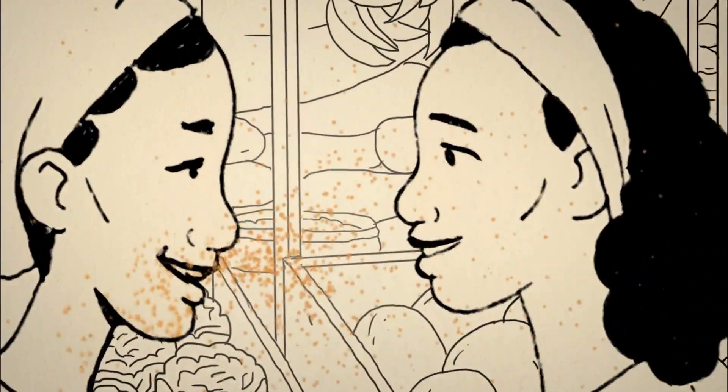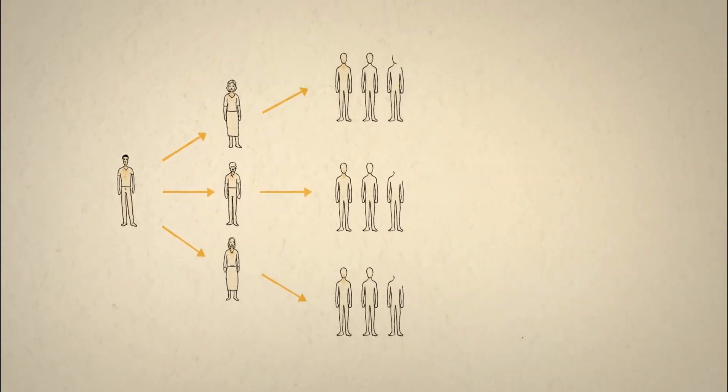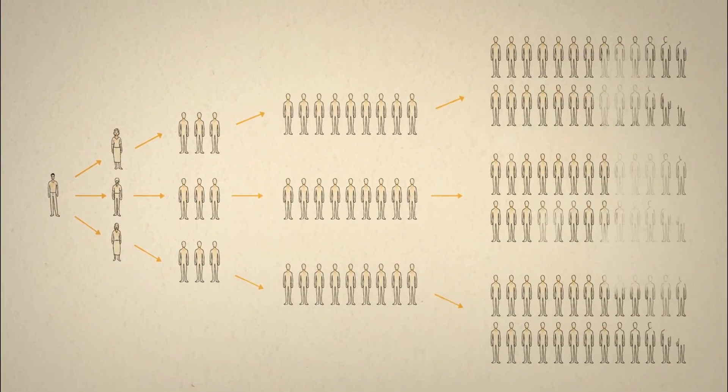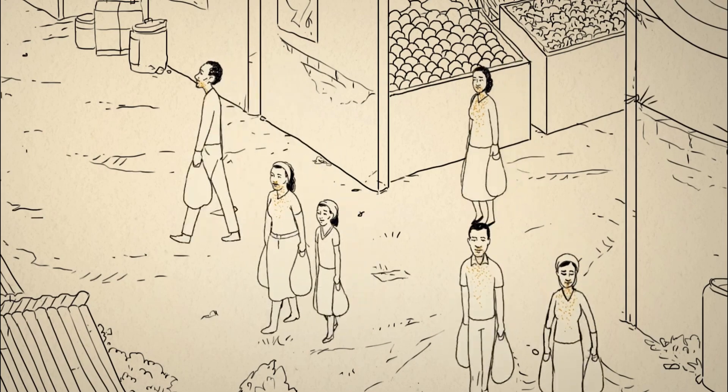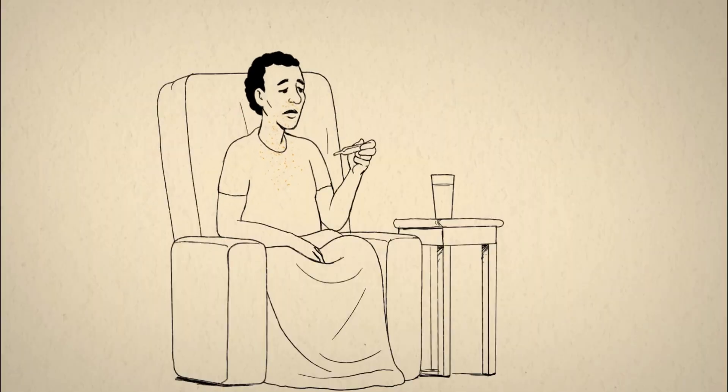We can have this virus and not know it, and easily pass it on to others who pass it to more people. In a few weeks, a whole neighborhood can get infected. Most people who get sick get better on their own, but some, especially the elderly and people who already have illnesses, can get very sick and even die.